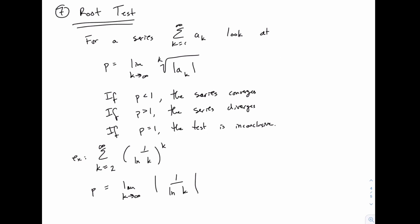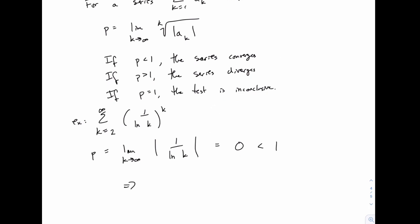because as k goes to infinity, ln of k goes to infinity as well, so 1 over ln of k goes to 0, which of course is less than 1 and that tells us that this series converges.